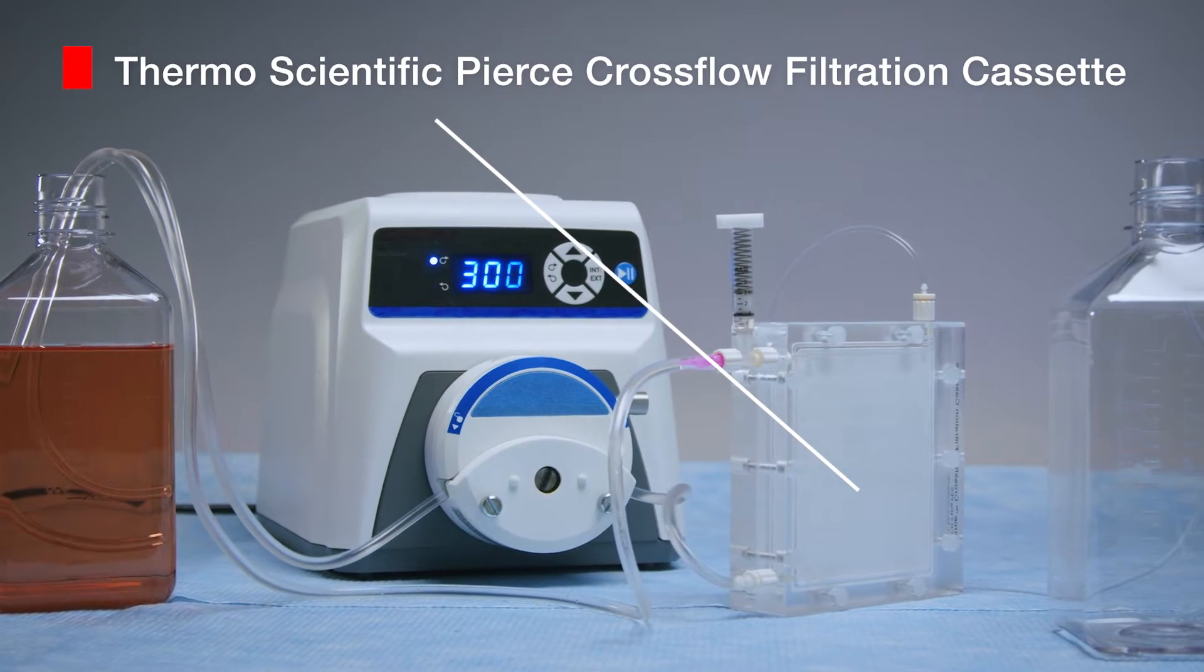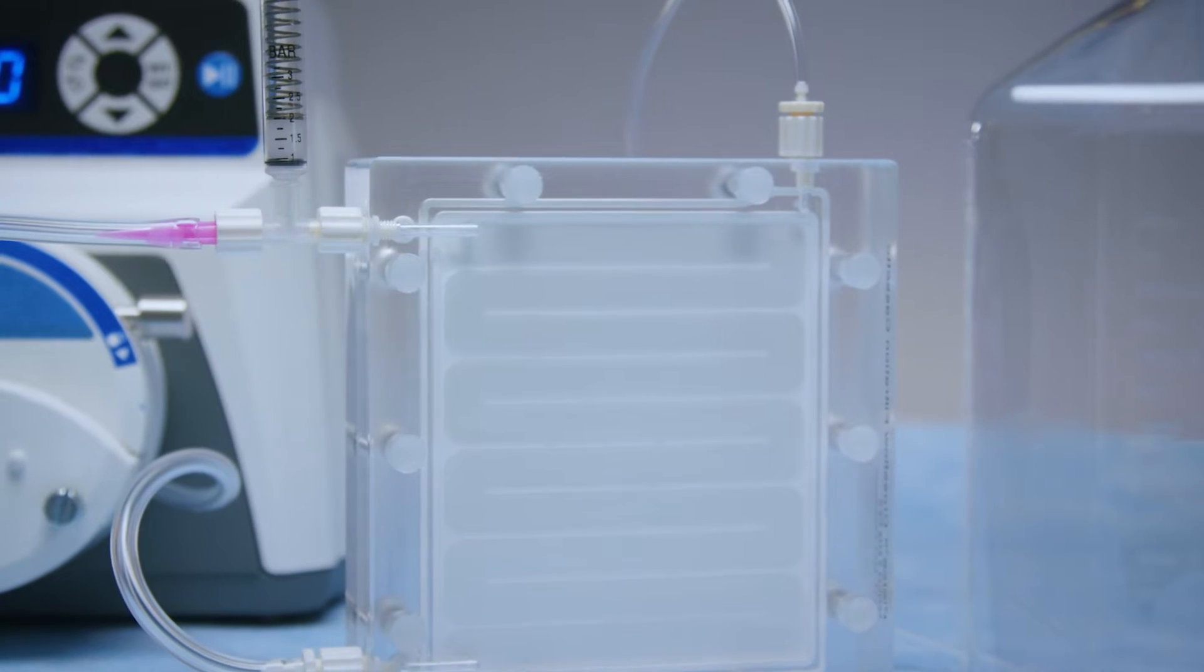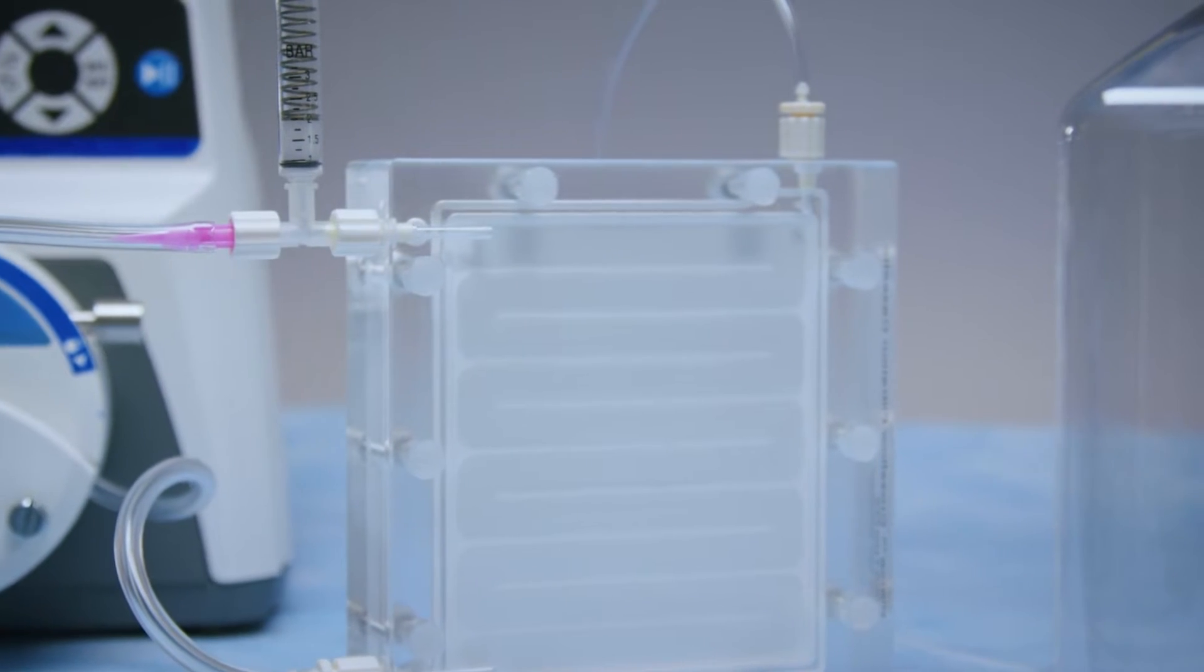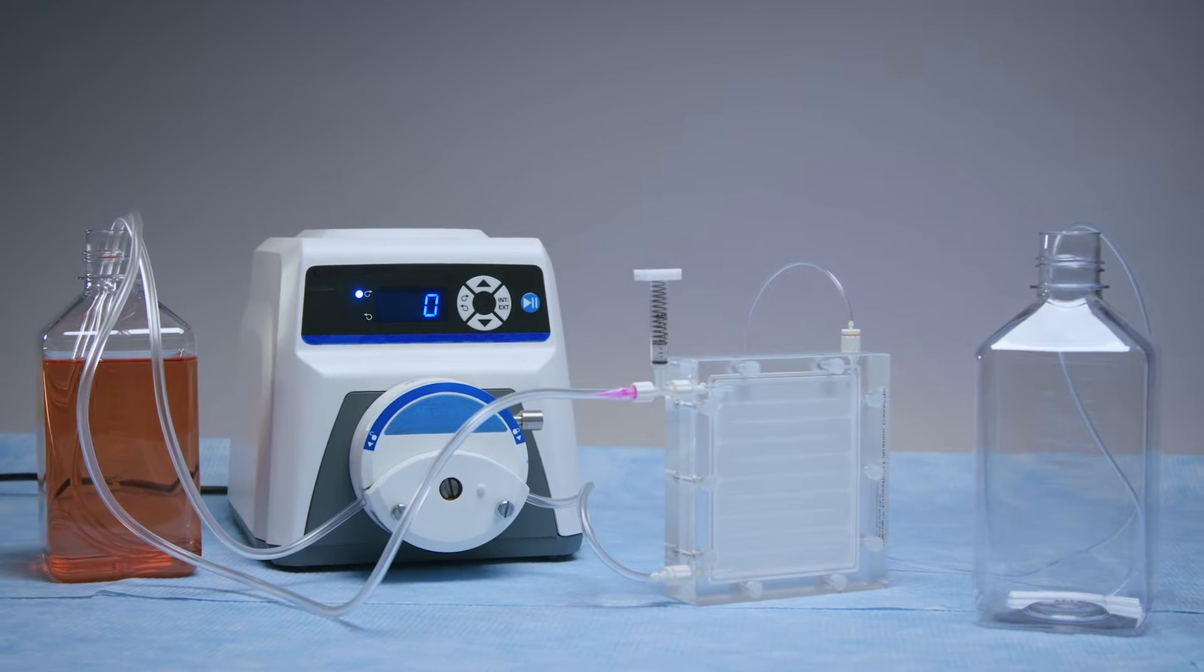The Pierce Crossflow Filtration Cassette is an easy-to-use, tangential flow filtration cassette for concentration and buffer exchange of biological samples such as proteins, nucleic acids, and virus particles.